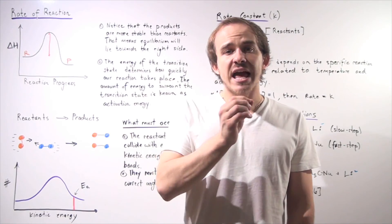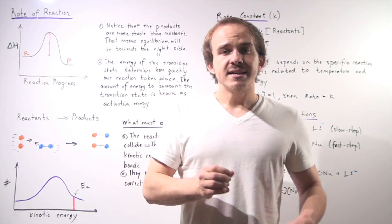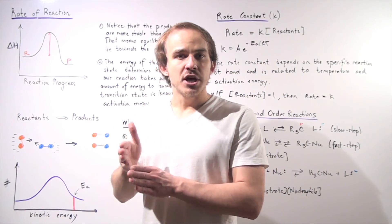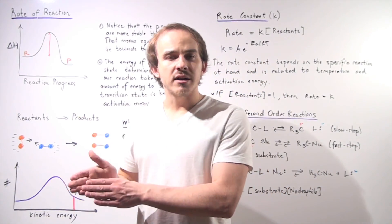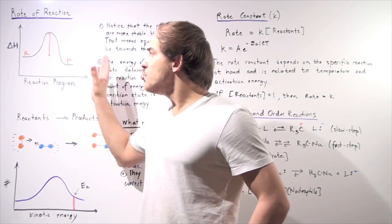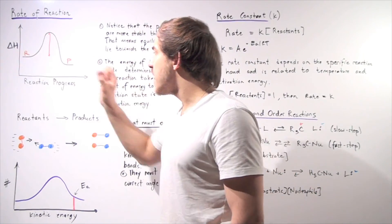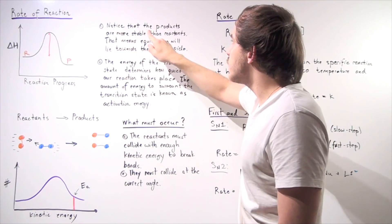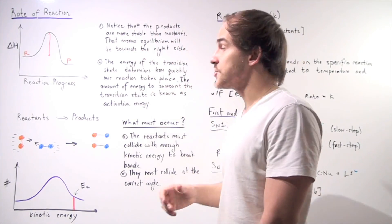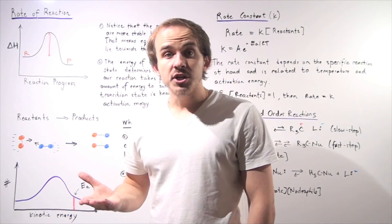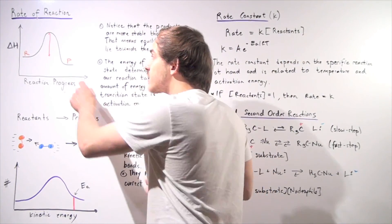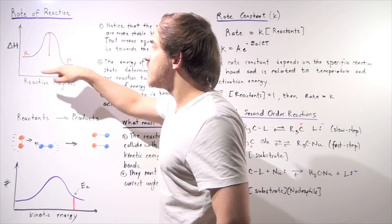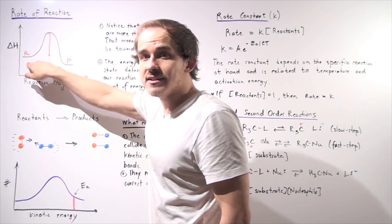Recall that change in enthalpy is simply the difference in the bond energies between the product and reactants. Notice from this energy diagram that the products are more stable than reactants, because the products are lower on the y-axis than the reactants.